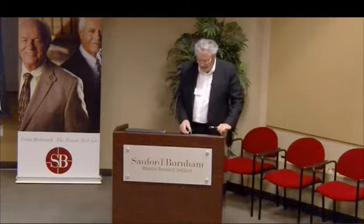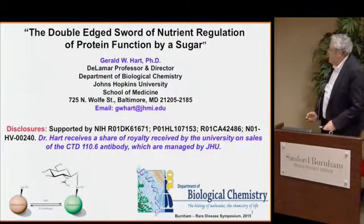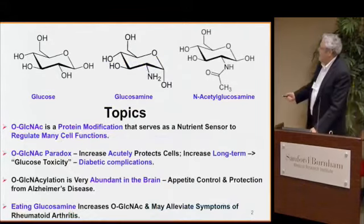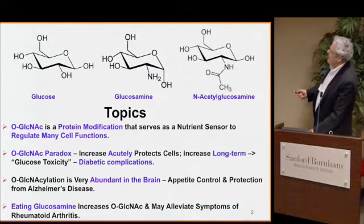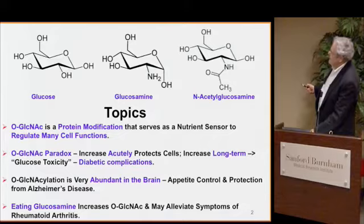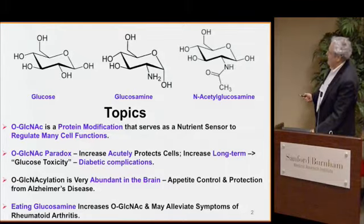First of all, I'd like to thank HUD for the invitation to attend this really fascinating meeting. What I'm going to talk about this afternoon is a protein modification, O-GlcNAc. I just put the structures of glucose, glucosamine, and N-acetylglucosamine up here so that you can see that N-acetylglucosamine is derived from glucose and structurally very similar to it, except it has an N-acetyl at the A2 position. About 30 years ago, we discovered that proteins were modified by this monosaccharide, and I'm going to talk about all of the many things it's been found to do.